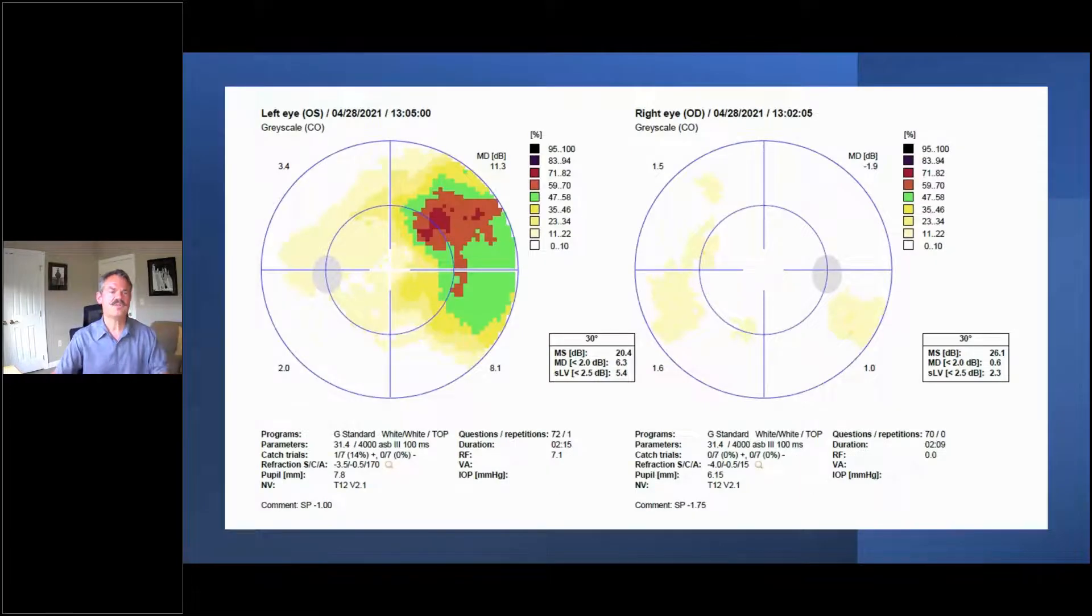As we look at the visual field, this is an Octopus visual field. The right eye is barely registering some scattered defects. But the left eye has an arcuate scotoma here that according to HAP criteria we would grade in the moderate range.